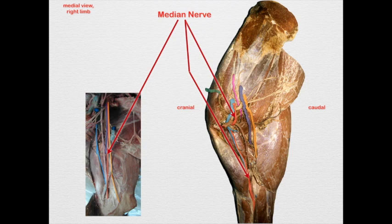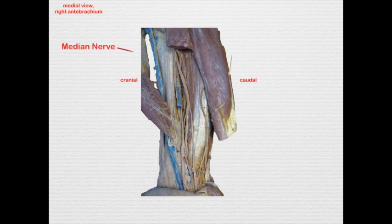Unlike in the dog, it's going to course with the musculocutaneous nerve, not the ulnar nerve like we saw in the dog. And we see it distally, it's going to dive deep to the flexor carpi radialis muscle. As we follow it more distally, here we've got the median nerve deep to the flexor carpi radialis muscle, which has been transected and reflected. As it comes down distally, it's going to divide into a medial palmar nerve and a lateral palmar nerve.